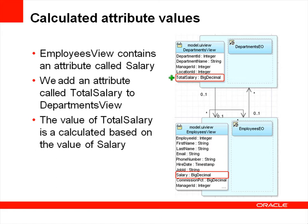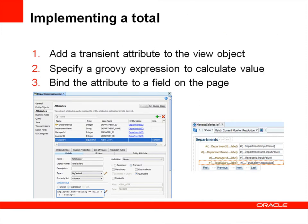We add an attribute called Total Salary to Departments View. The value of Total Salary will be calculated based on the value of the Salary attribute in Employees View. In this demonstration, you learn how to use Groovy to calculate the total. Groovy is a scripting language that uses a simple Java-like syntax for manipulating Java objects. To implement a total, you add a new transient attribute to the view object. Transient attributes are often used to provide subtotals or other calculated values that are not stored in the database.